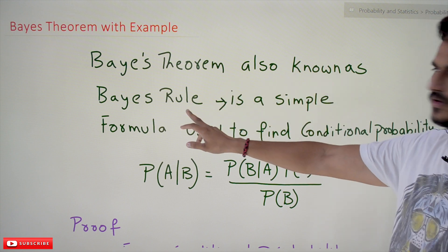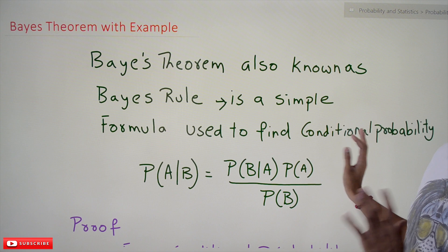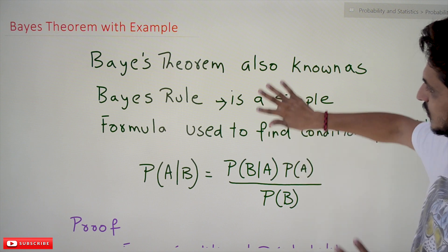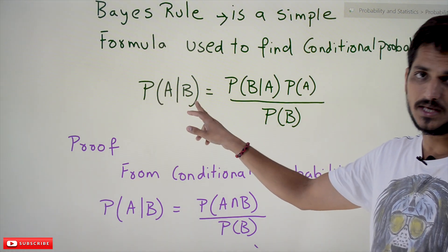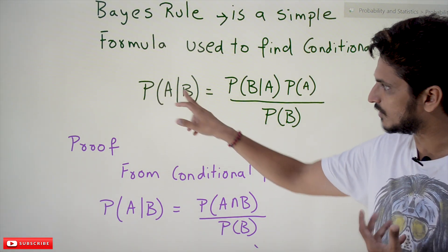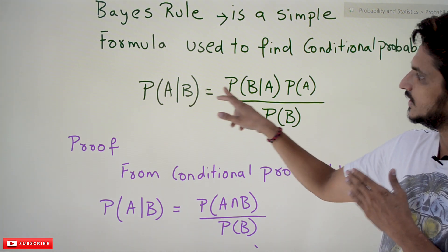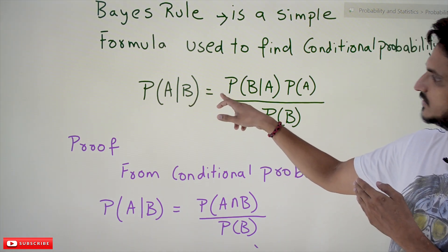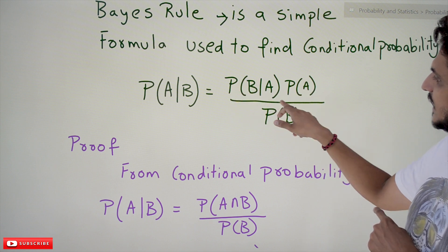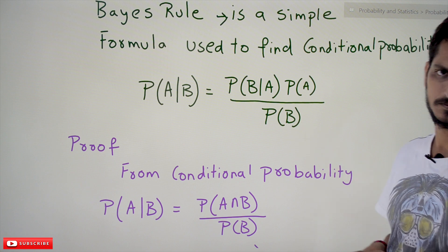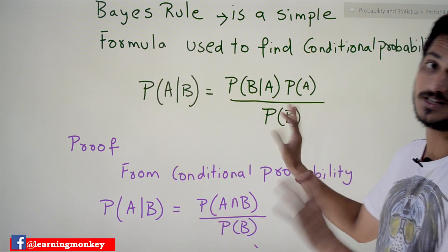Bayes' theorem, also known as Bayes' rule, is a simple formula used to find conditional probability. First we will discuss the equation and what the formula says. Probability of A given B — if you want to identify the probability of A, if B is given, that conditional probability can be identified using this equation: it is equal to probability of B given A, multiplied by probability of A, divided by probability of B. This is what Bayes' equation says.